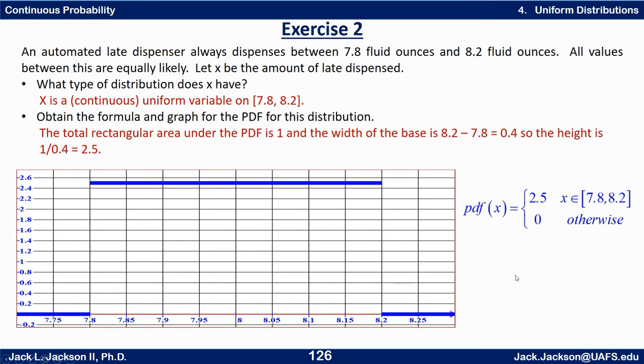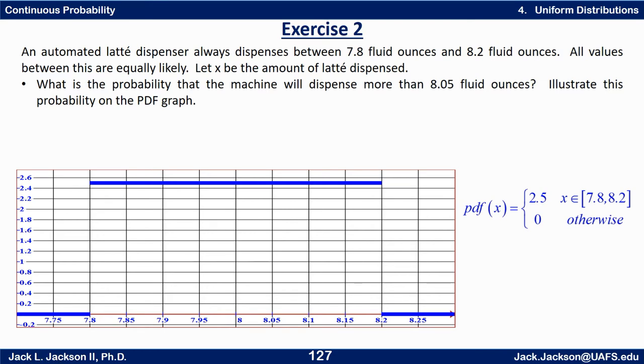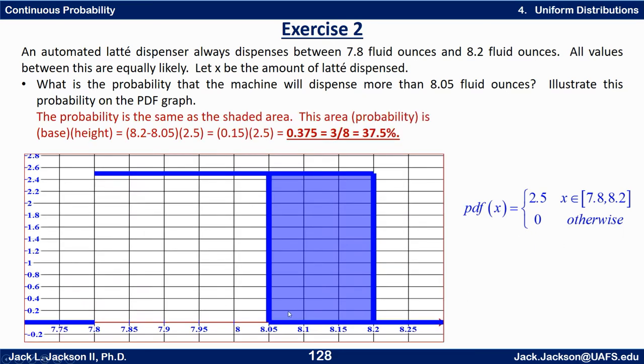And we can find some probabilities now. Okay so what's the probability that the machine will dispense more than 8.05 fluid ounces? Illustrate it on this graph and then compute that value. Press pause when you're done. Well what we're talking about here when we have a PDF graph of any continuous distribution we're talking about an area being a probability. So the area specifically that we're looking for here is the area of the shaded rectangle. So the base goes from 8.05 to 8.2 which is 0.15 and its height is again 2.5. So it's 0.15 times 2.5, it's 0.375 or 3 eighths. 37.5 percent could be expressed in any of those forms. And we get that.